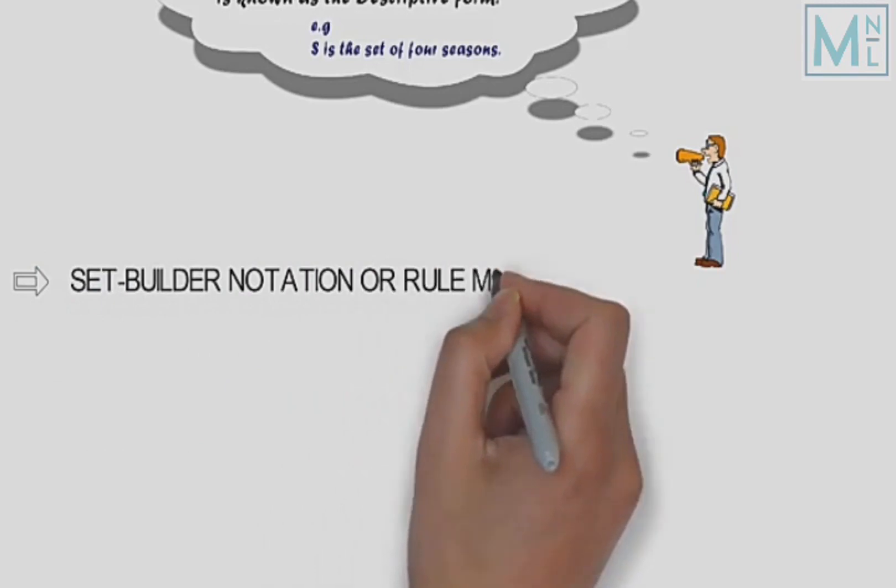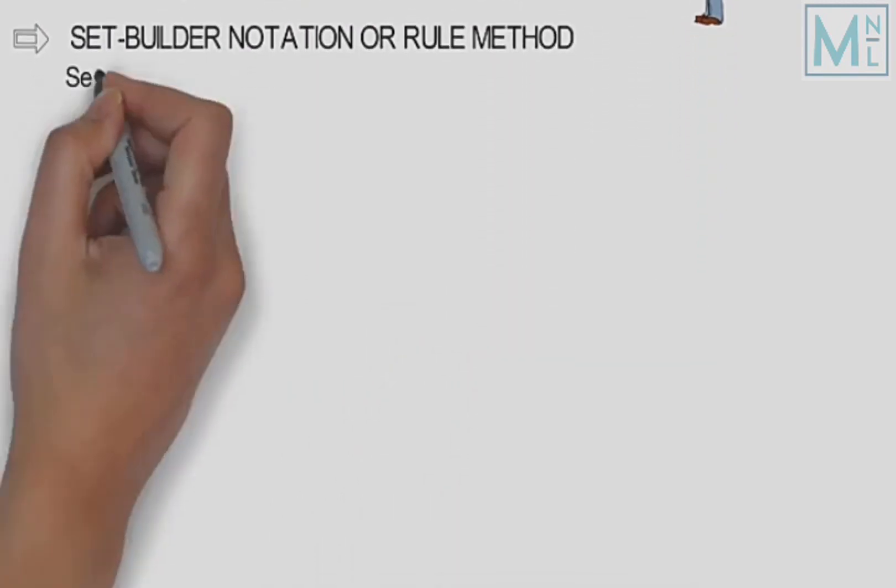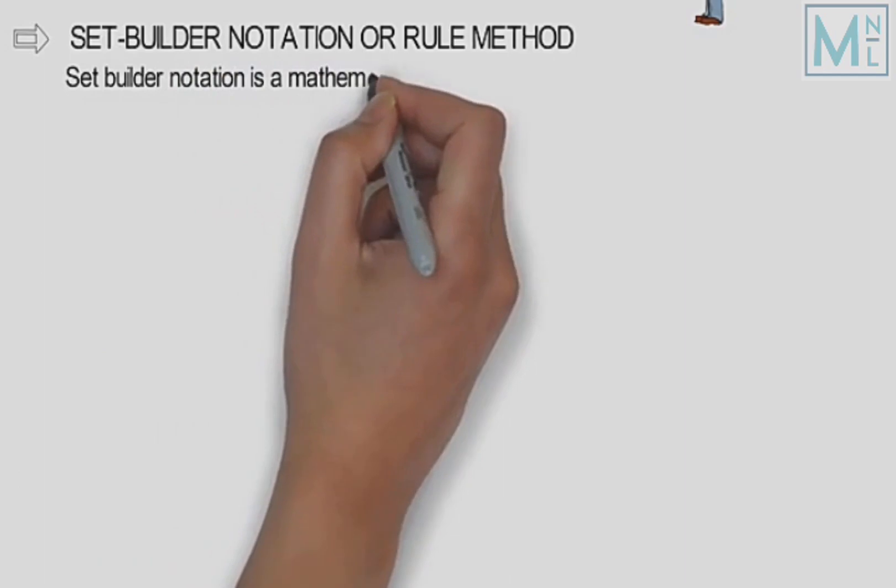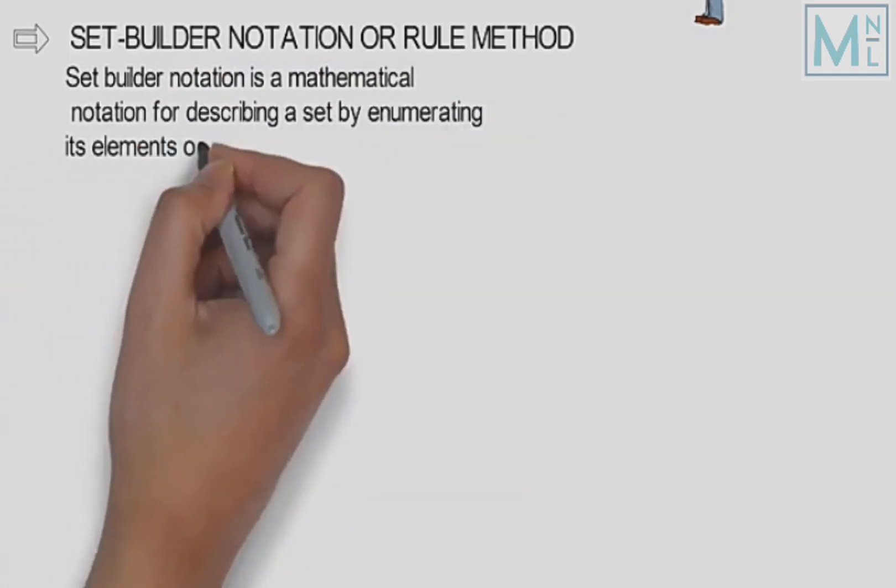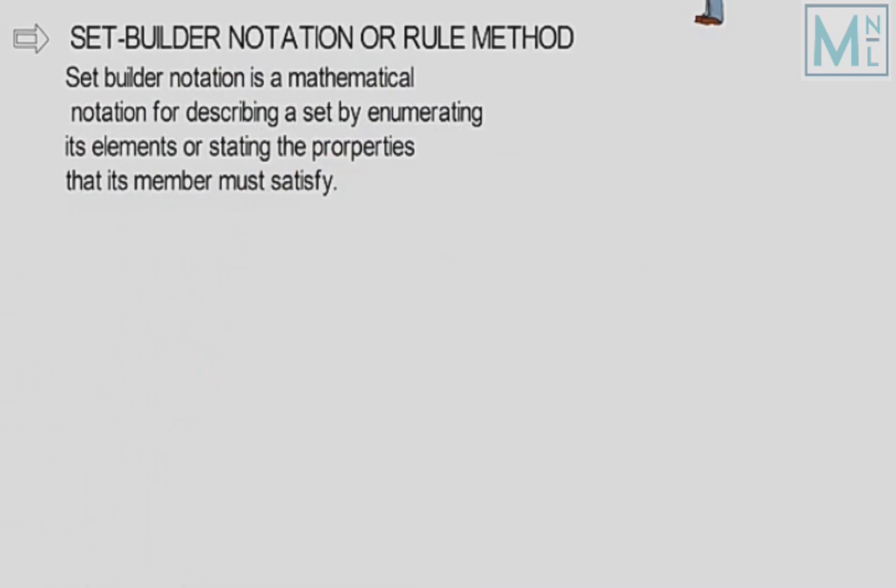Tisra tarika jo hai set ko present karne ka, woh hai set-builder notation, jise rule method bhi kaha jata hai. Is method mein hum set ko mathematical symbols ki madad se describe karte hain jo uske elements ko satisfy karen.